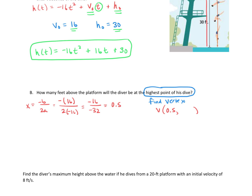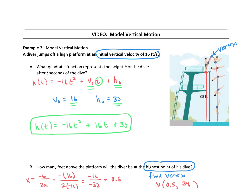Now to get the y-coordinate, we take that 0.5 and plug it into our function to find h of 0.5. In terms of the context of this problem, we're finding the height of the diver 0.5 seconds into his dive. So negative 16 times 0.5 squared plus 16 times 0.5 plus 30. We grab our calculators and carefully type that in, and we get 34. So the highest point of the dive is at the ordered pair 0.5, 34 — after half a second, the diver is at a height of 34 feet.